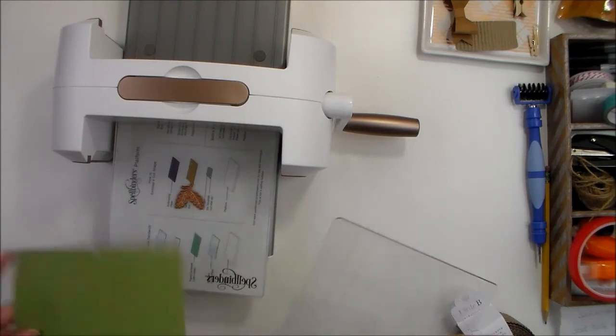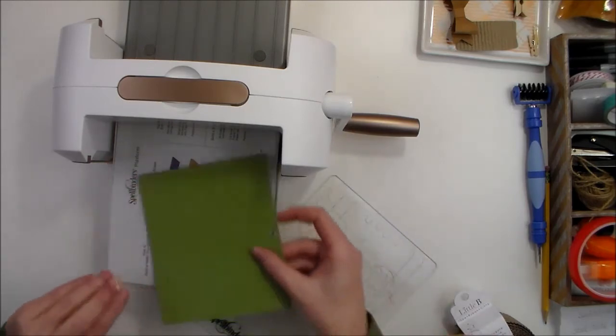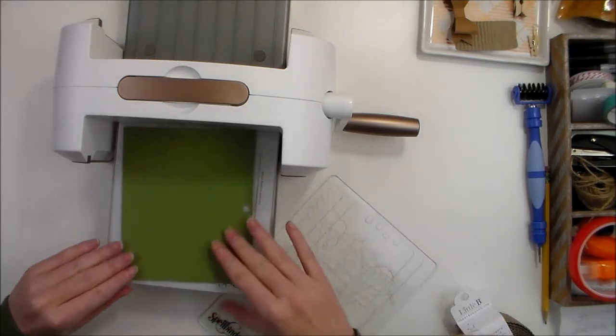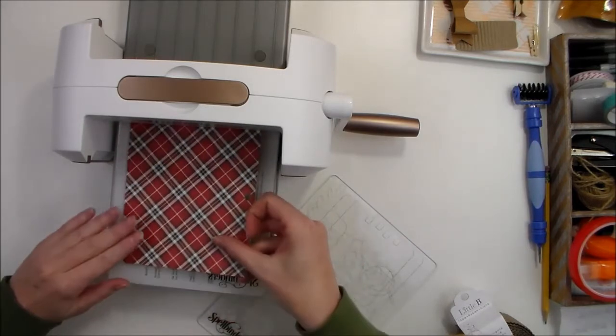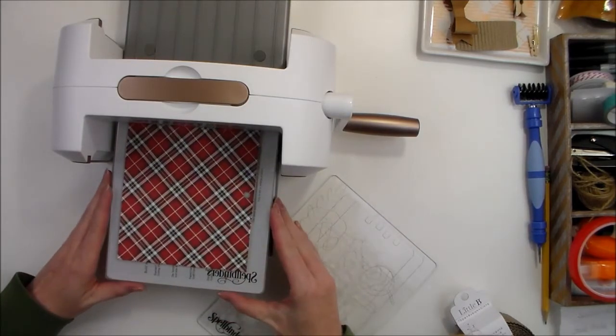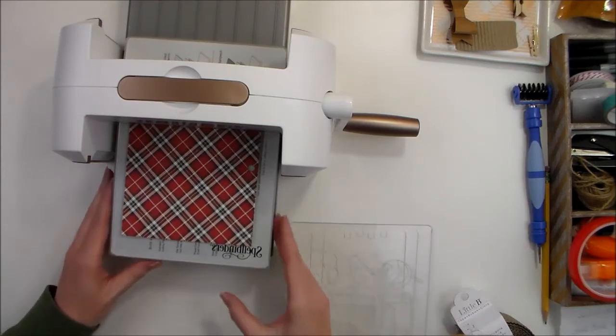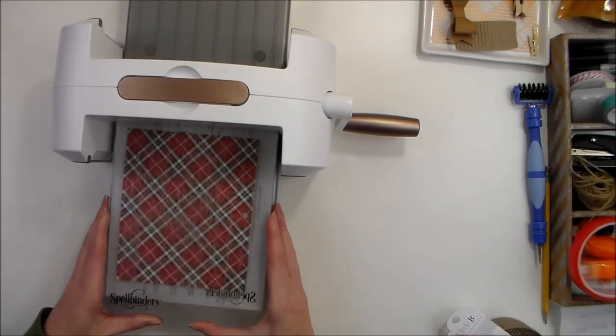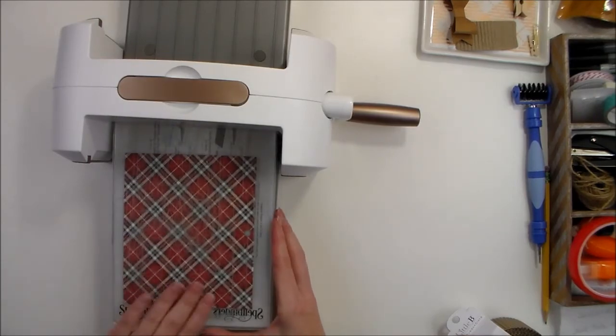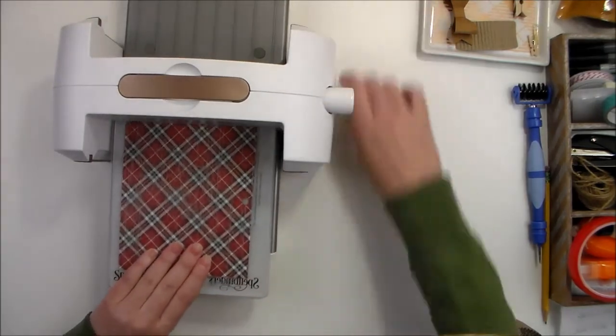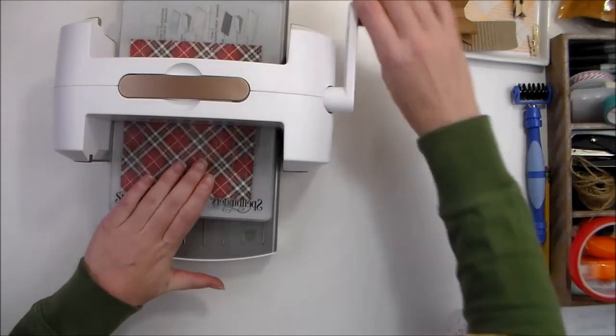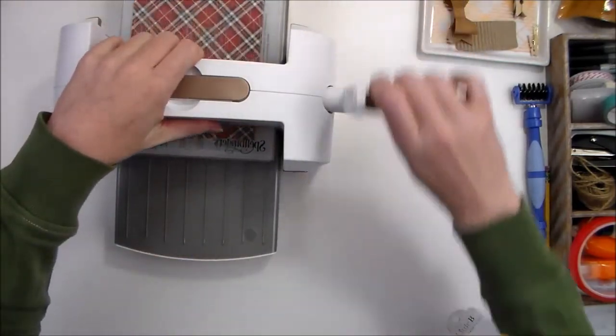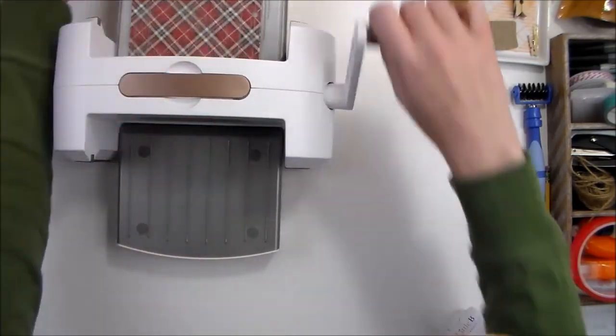And then the die, and then the paper, and I'm actually going to turn this over this way so my leaves are facing the right direction. And then you just put the other cutting plate on top and just run it through your machine just like that.